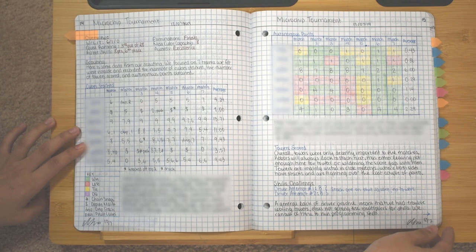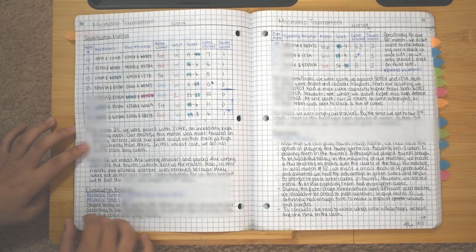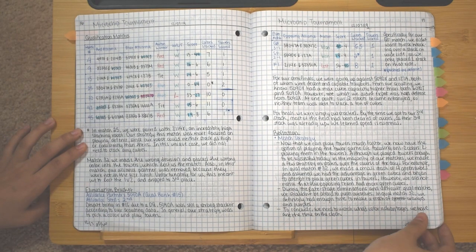Next is the skills challenge section. Afterwards, we have a full list of our qualification matches, including our score, autonomous winner, and our opponents.